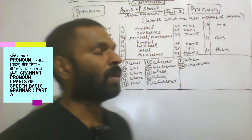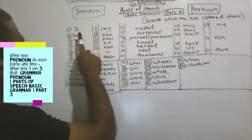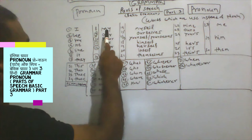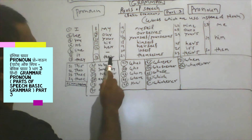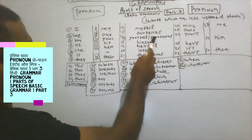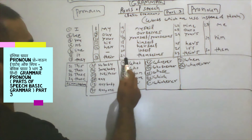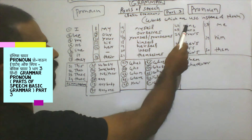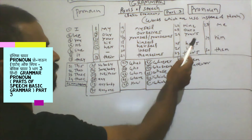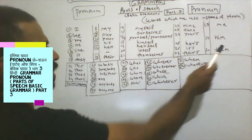The pronouns include: I, we, you, he, she, it, they, my, our, his, her, their, ourselves, yourself, himself, herself, itself, themselves — that's 22 pronouns. Then: mine, ours, yours, hers, its, theirs, me, him, and them. These 30 words are the personal pronouns.